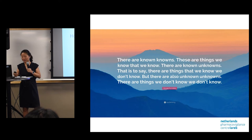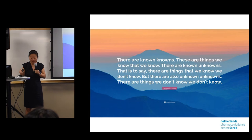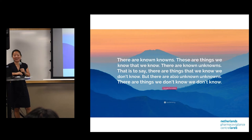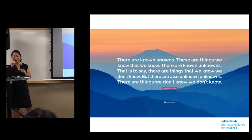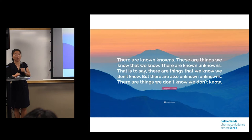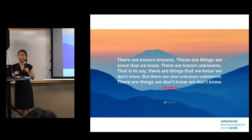I like this quote very much — it's from Donald Rumsfeld. He says there are known knowns, known unknowns — things we are aware that we don't know — but there are also things that we don't know that we don't know. This illustrates a very good framework also for pharmacovigilance. The known knowns would be the adverse drug reactions identified in clinical trials.